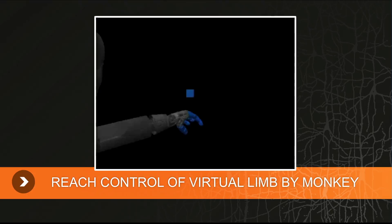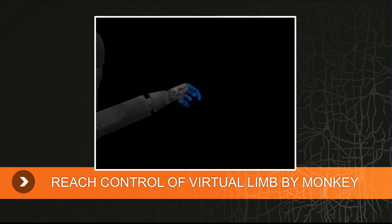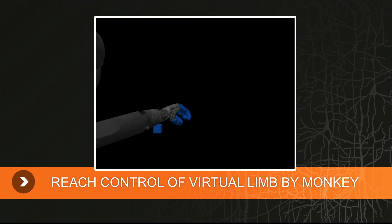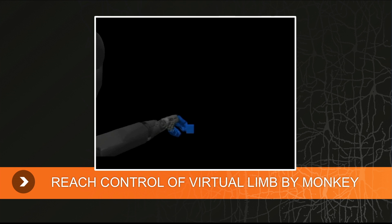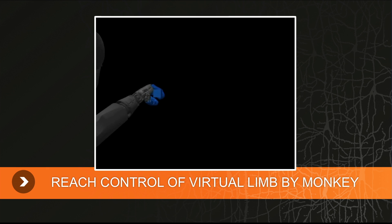This next movie shows an example of a monkey with reach control, again operating in a virtual reality environment. He's moving this limb in 3D under just visual feedback to touch the object in space. Each time he touches it — you hear that sound — he gets a drop of juice.